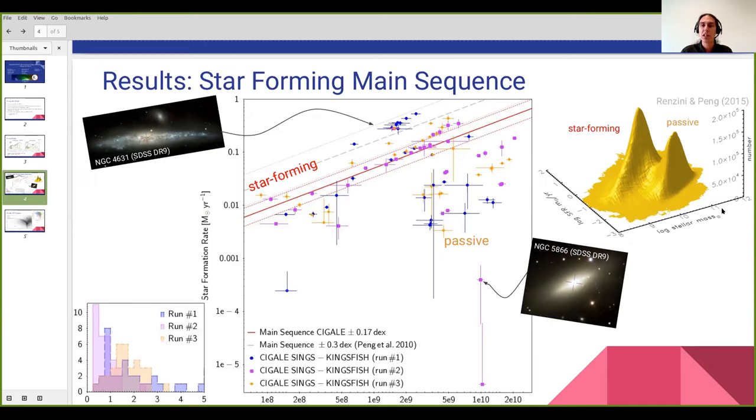You would expect a bimodality between star forming galaxies and passive galaxies that both form quite a strong ridge. Especially the star forming galaxies are found along this main sequence of star forming galaxies. So what do we find for our CIGALE sample? First of all, we see that the galaxies fall into a broad range of properties. We have the star forming galaxies as well as some passive galaxies.